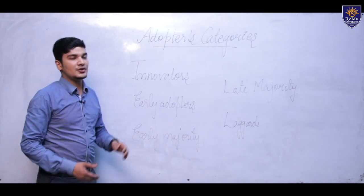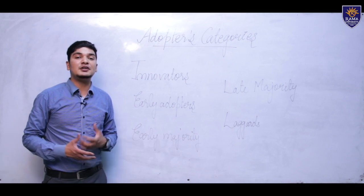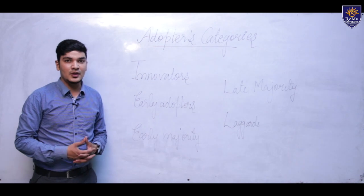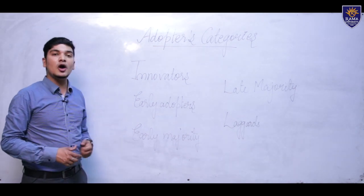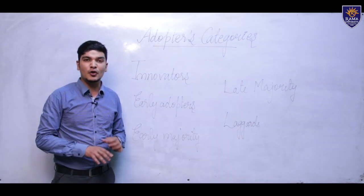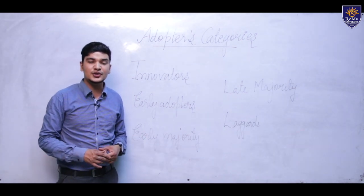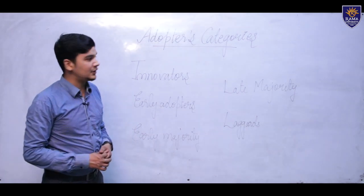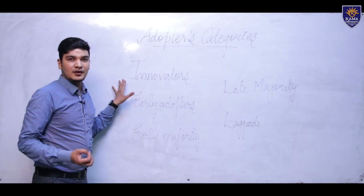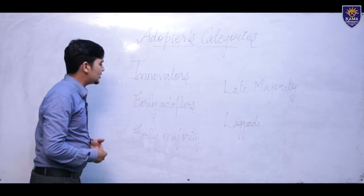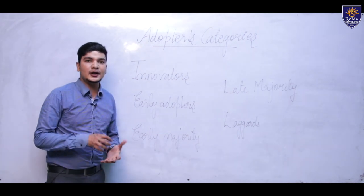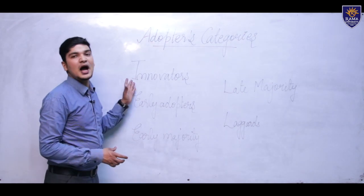Innovators are those innovative farmers who usually adopt new technologies first. They are called the torch bearers of the society and are curious about new technologies and whatever new things are being used in the world for agricultural development. Innovators are the category that adopts new technologies first within the society.